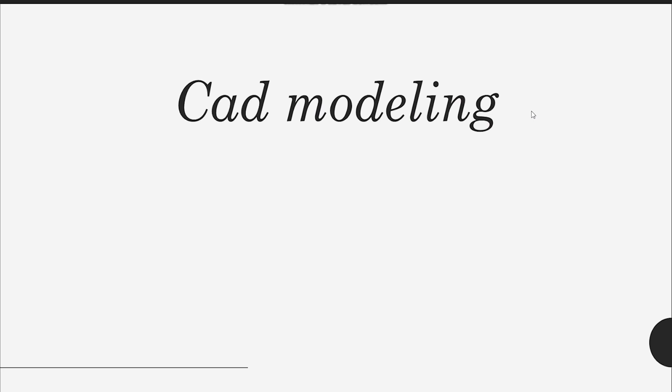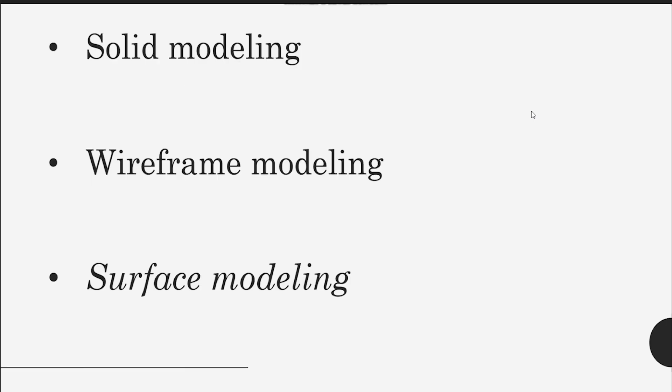CAD modeling — computer-aided design — is anything that you design with a computer software. There are basically three kinds of software used in CAD modeling: the first one is solid modeling, the second is wireframe modeling, and the third is surface modeling.